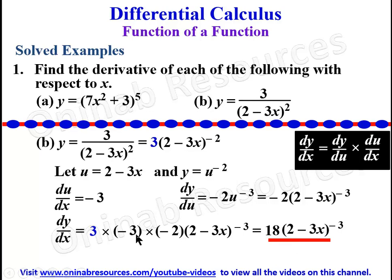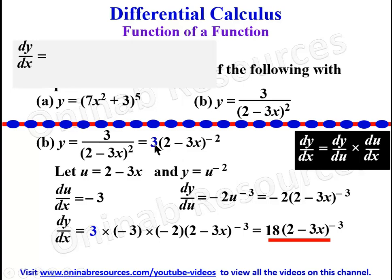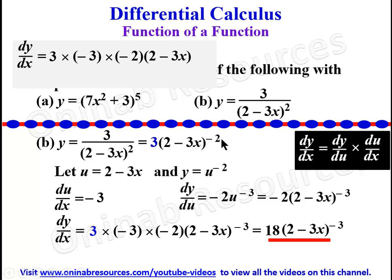We can apply a quicker method for this derivative, concentrating on the index form. For dy/dx: bring in the constant 3, find the derivative of what is inside the bracket which is -3, multiply by the power -2, then bring in the bracket and reduce the power by one: -2 - 1 = -3. This gives 3 × (-3) × (-2)(2 - 3x)⁻³ = 18(2 - 3x)⁻³, the same answer.